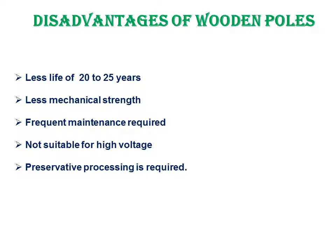Disadvantages of wooden poles: the life is very low — about 20 to 25 years. Mechanical strength is very low, so we cannot attach heavy conductors. The voltage level is also low; beyond 440 volts you cannot use it. Maintenance is needed very frequently due to atmospheric conditions like rain. It is not suitable for high voltage. Preservative processing is required to prevent decomposition.